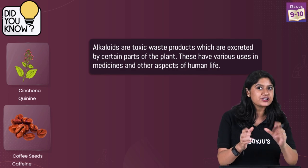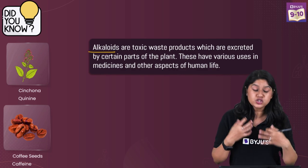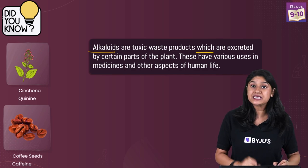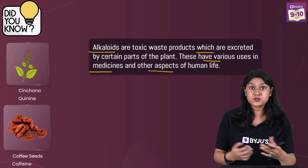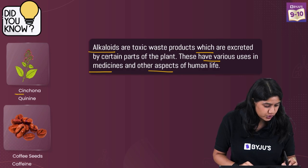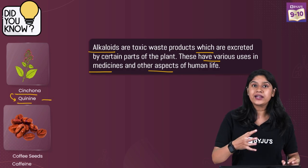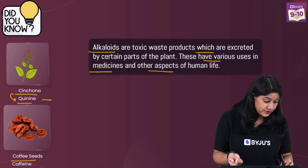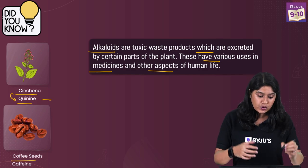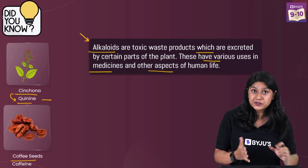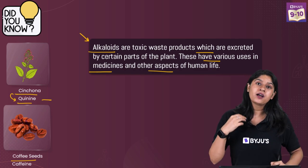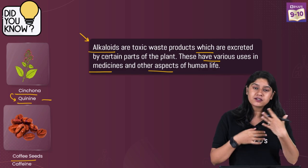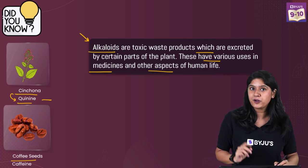Plants actually have alkaloids which are toxic waste, and these are excreted by certain parts of the plant. Interestingly, they are used to make various medicines and serve other purposes. For example, from cinchona we get quinine, which is used in the treatment of malaria. From coffee seeds we get caffeine. So while plants have various toxic materials that are not useful to them and they excrete these out, they are really very useful for humans and we use them in different aspects of our lives.